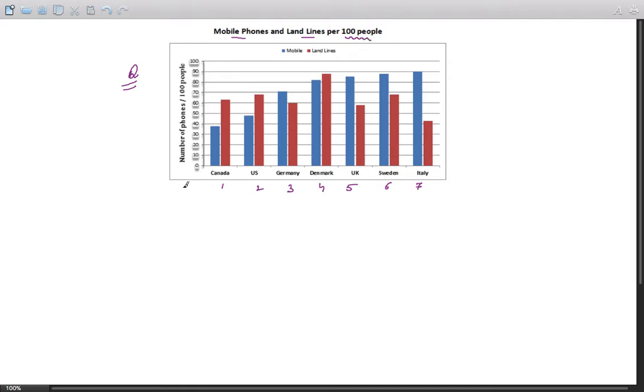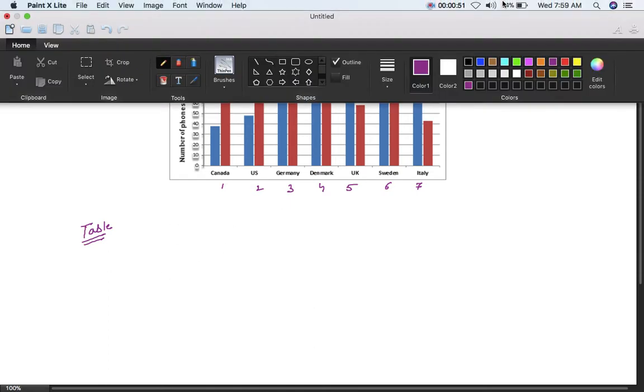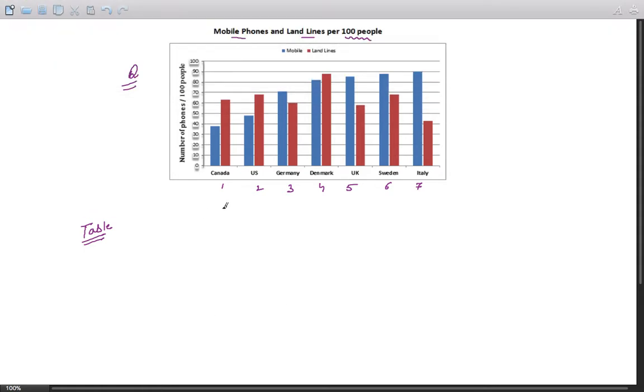Let us try to structure this. The best way to find out an appropriate structure for a bar chart is to draw a table. A table is the best tool that will give you an idea of how to structure it. You do not need to draw the entire table, just draw a rough structure.